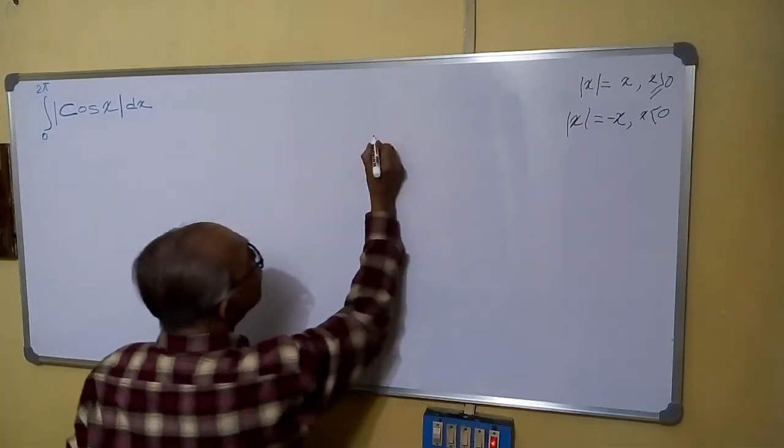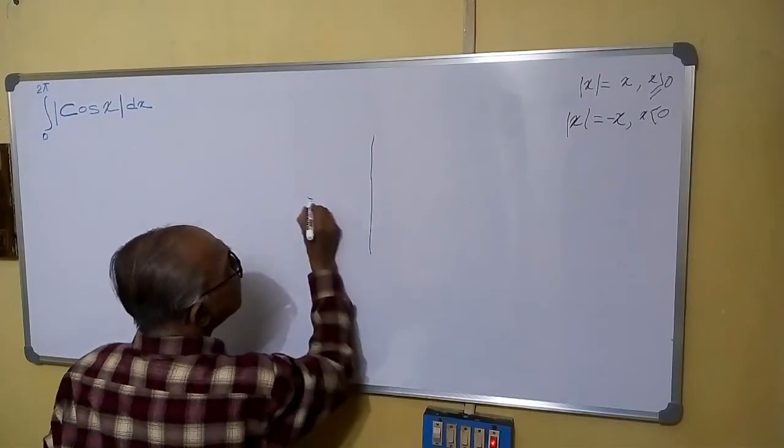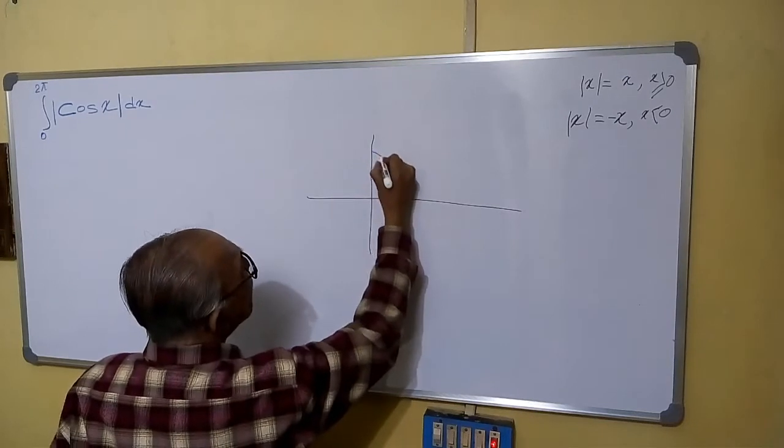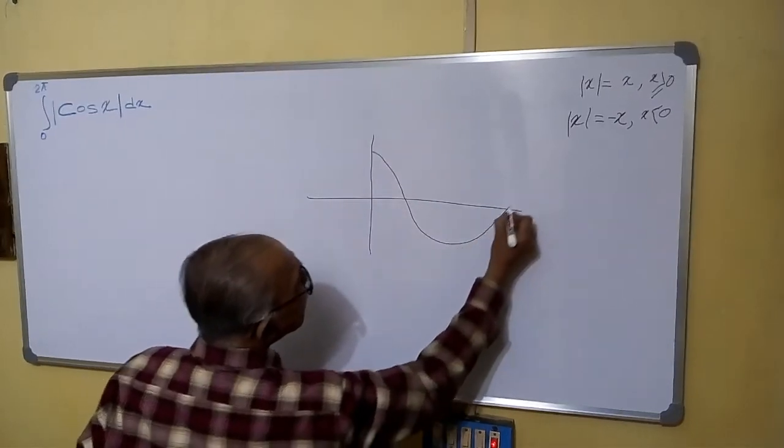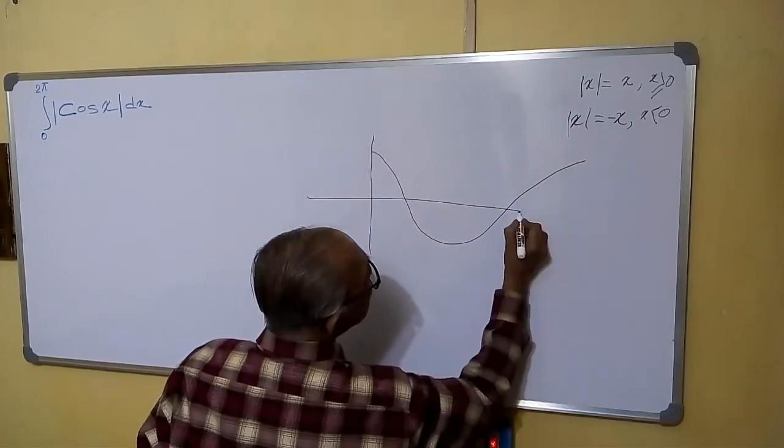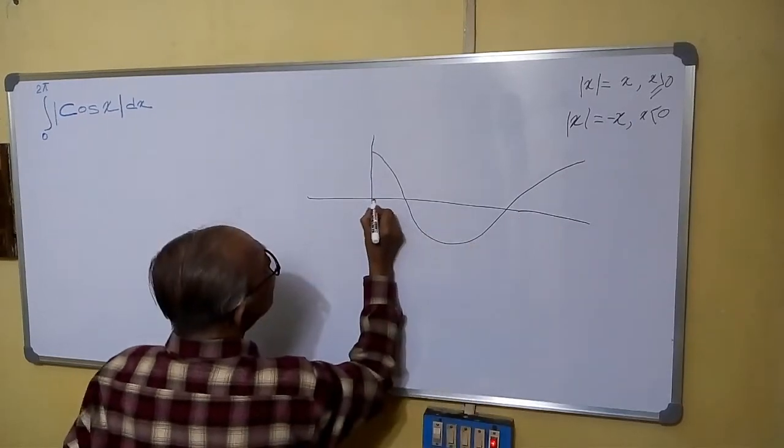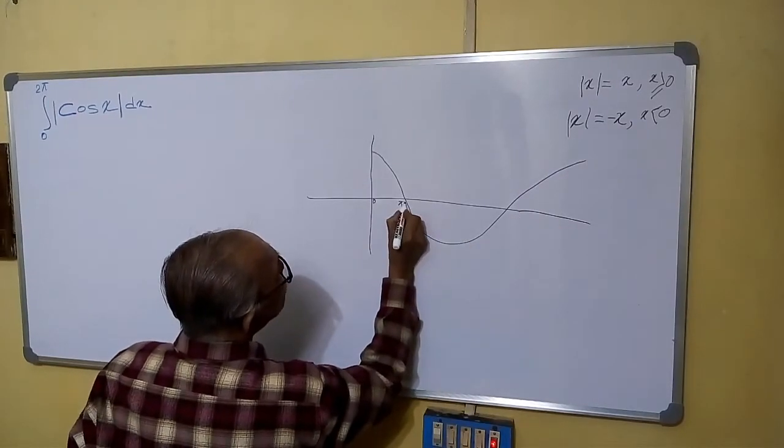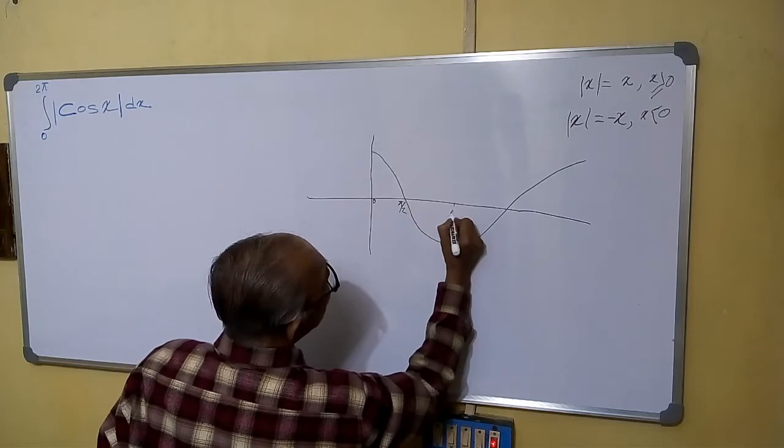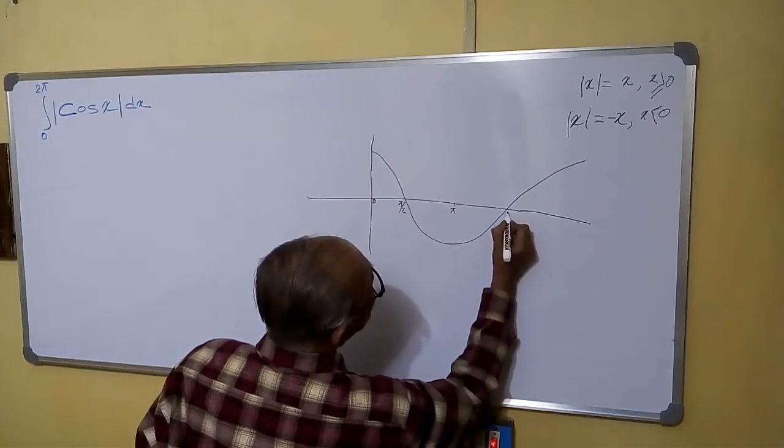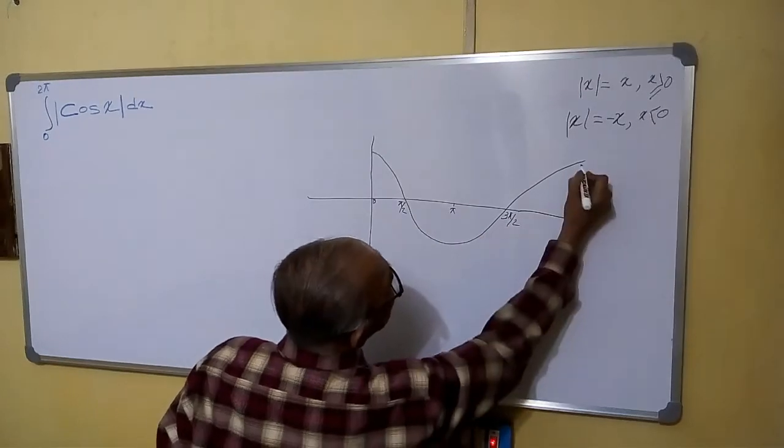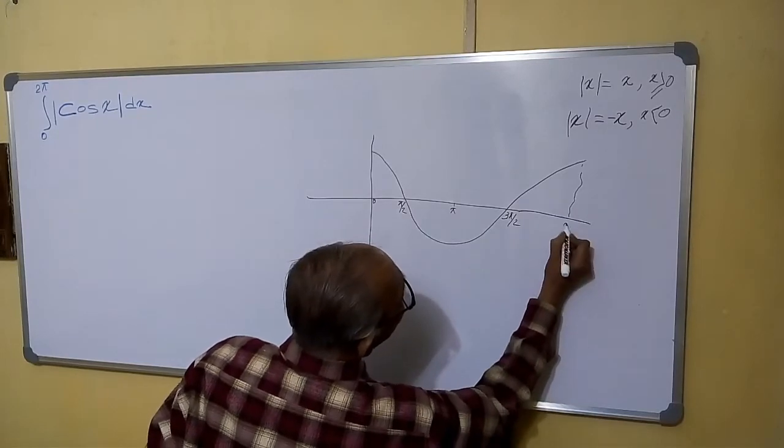If we are seeing, cos 0 is 1 in this way. This is 0, pi by 2, here is pi, here is 3 pi by 2, and here is 2 pi.